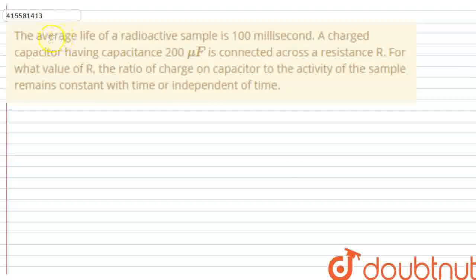Hello guys, this question has come from us. The average life of a radioactive sample is 100 milliseconds. A charged capacitor having a capacitance of 200 microfarads is connected across resistance R. For what value of R, the ratio of charge on capacitor to the activity of the sample remains constant with time or independent of time.